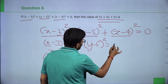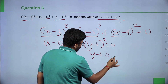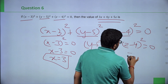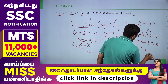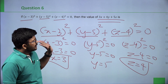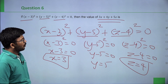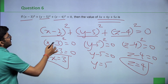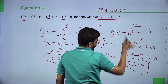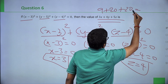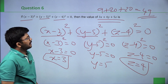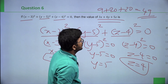Since each squared term is non-negative, if their sum equals 0, each term must individually be 0. So x minus 3 = 0 gives x = 3, y minus 5 = 0 gives y = 5, z minus 4 = 0 gives z = 4. Now: 3x = 9, 4y = 20, 5z = 20. So 9 plus 20 plus 20 = 49. The answer to 3x plus 4y plus 5z is 49.